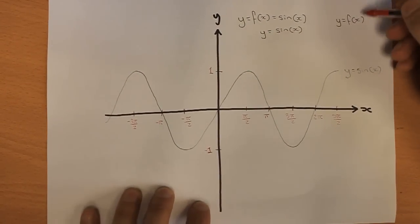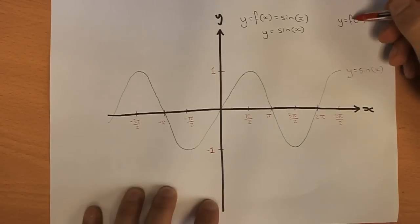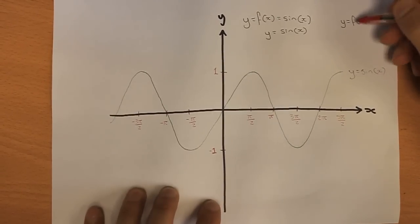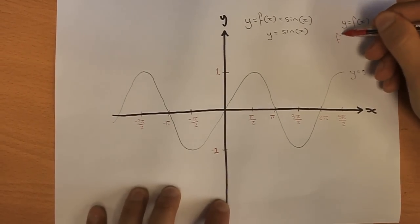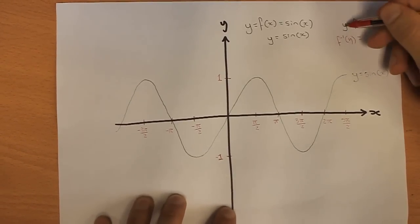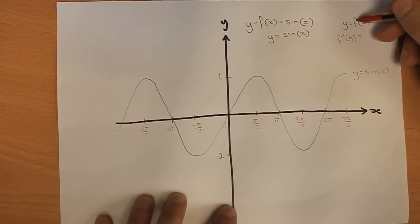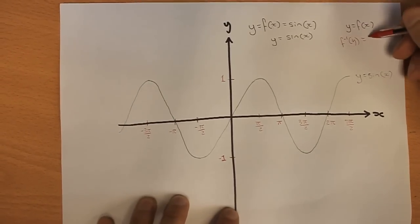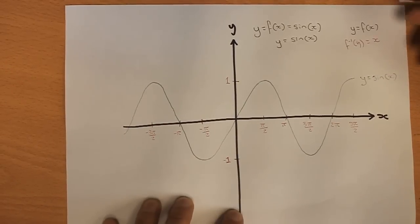We call it f to the minus 1. So if we apply that to this equation, we get f minus 1 of y doing it to both sides. It undoes this f and we get left with x.